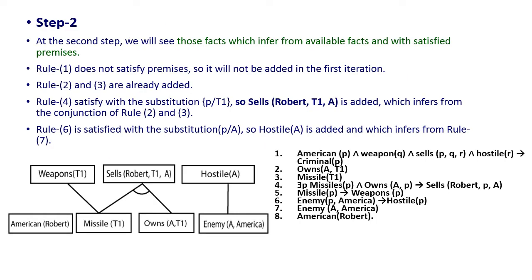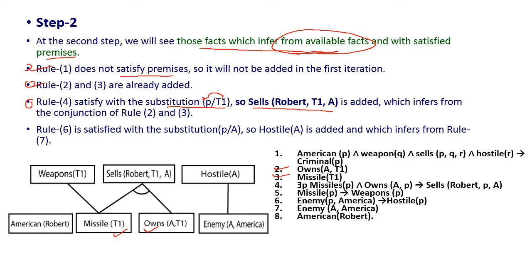In the second step, we look at the facts which can be inferred from the available facts by satisfying the premises. We go through all the rules one by one. The first rule does not satisfy the premises in this iteration, so we skip it. Rules 2 and 3 are already added as known facts. Applying rule 4 with substitution T1 for P, we add sells(Robert, T1, A), which is the conjunction of rules 2 and 3.